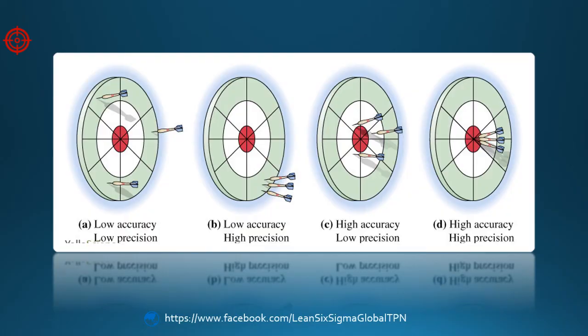Accuracy and precision are independent, i.e., we can have a measurement that is accurate but not precise, precise but not accurate, neither accurate nor precise, or both accurate and precise.